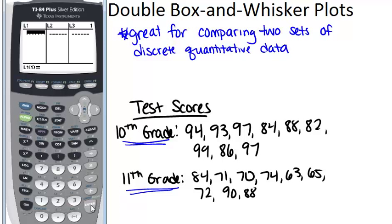So in the 10th grade list you just want to enter in all the data starting with 94, then 93, then 97, 84, 88,